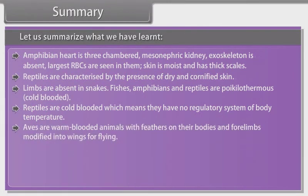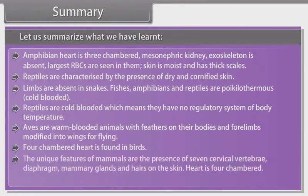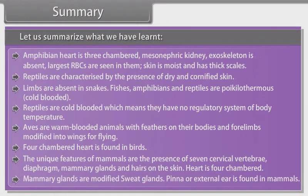Reptiles are cold-blooded, which means they have no regulatory system of body temperature. Aves are warm-blooded animals with feathers on their bodies and four limbs, with forelimbs modified into wings for flying. Four-chambered heart is found in birds. The unique features of mammals are the presence of seven cervical vertebrae, diaphragm, mammary glands and hairs on the skin. Heart is four-chambered.